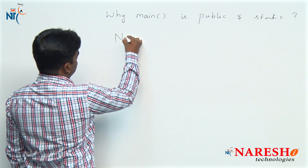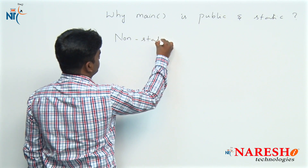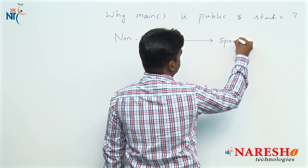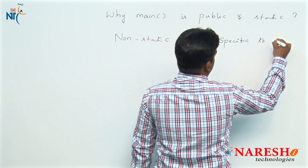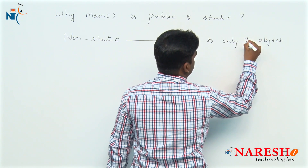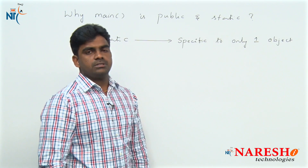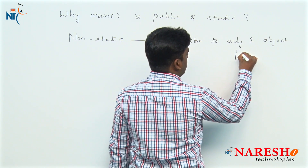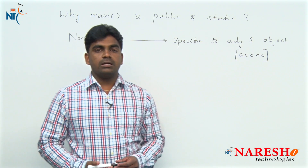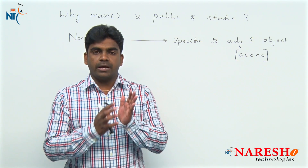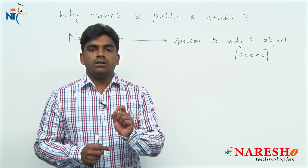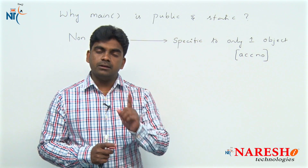Non-static means it is specific to only one object. For example, take an account number in a bank application — an account number is not common, no one can share this information. An account number particularly belongs to only one person. That is what we call non-static — the number is very clear, that is one.